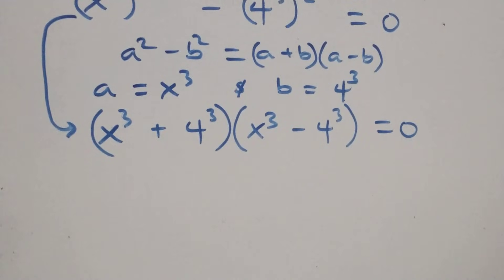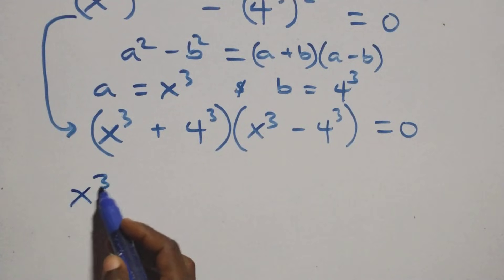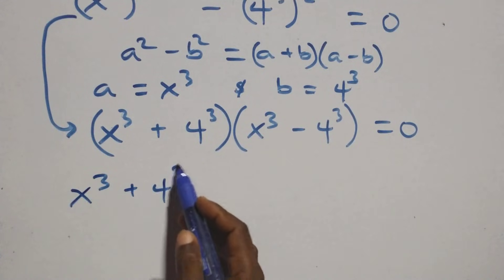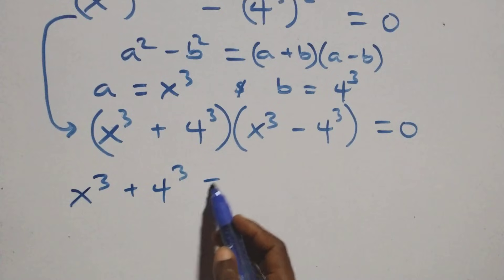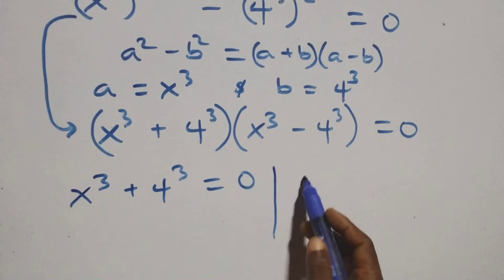At this point, we have two possible cases. First case: x raised to power 3 plus 4 raised to power 3 equals to 0.